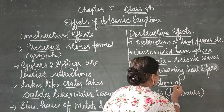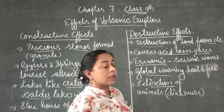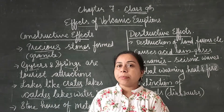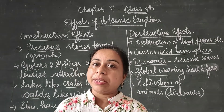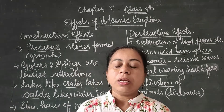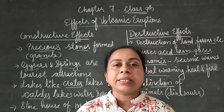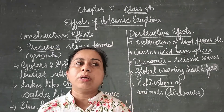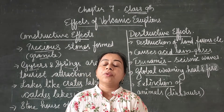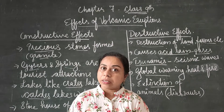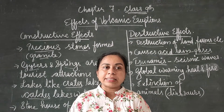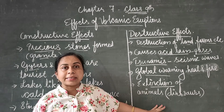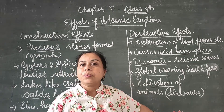Next is the extinction of animals. Just like with the dinosaurs, some volcanic eruptions — along with possible landslides — caused a lot of animals to go extinct. Extinct means they are not present at all now; we cannot see those types of animals anymore, because they have already gone extinct. Volcanic eruption may be a cause for the extinction of animals.